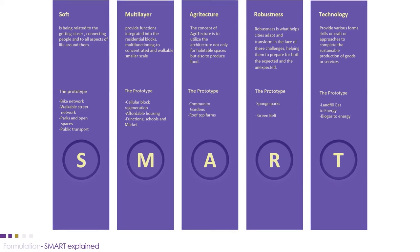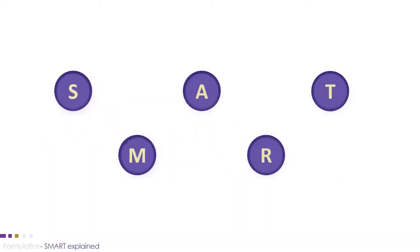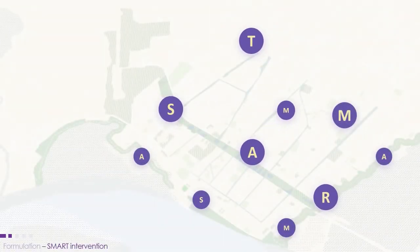For example, 'Soft' is directly related to mobility, and green network is the prototype project. On the other hand, 'Multi-layer' is directly related to housing and services, so we chose affordable housing as the prototype project. The SMART framework is applied from city scale to barrio scale across our study areas.